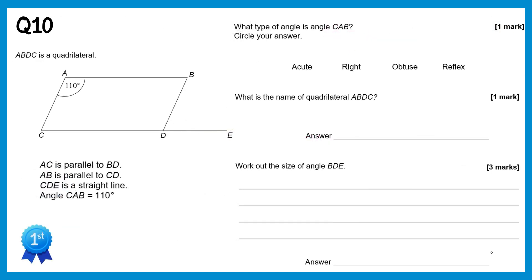For the first part we need to identify the angle type. An acute angle is 0–90°, a right angle is 90°, an obtuse angle is 90–180°, and a reflex angle is 180–360°. The angle in the question is 110°, so that's an obtuse angle because it's between 90 and 180.